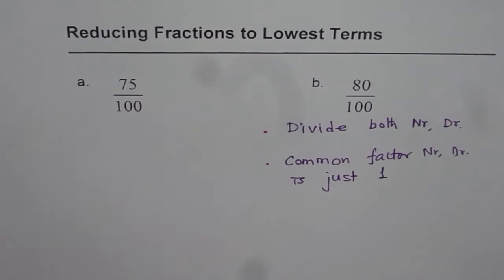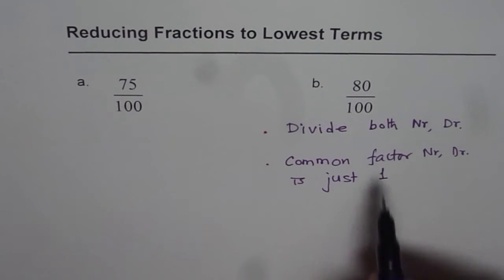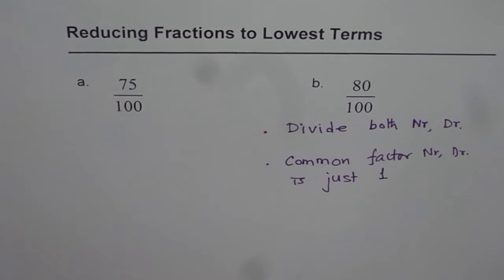So, no other factor is common. If you fulfill these two things, you actually reduce fractions to lowest terms, correct?